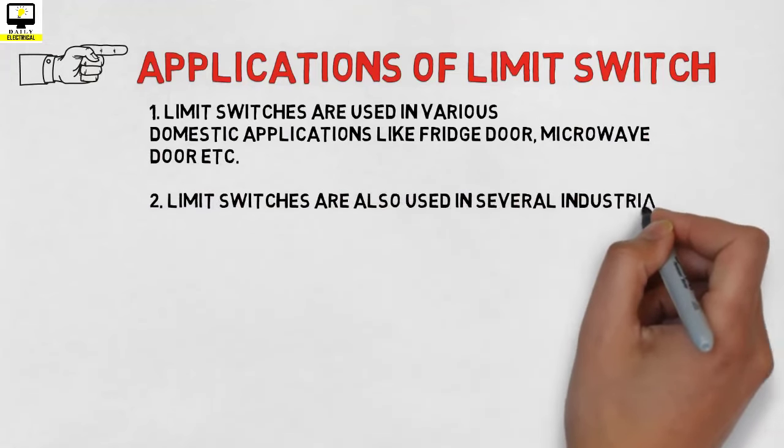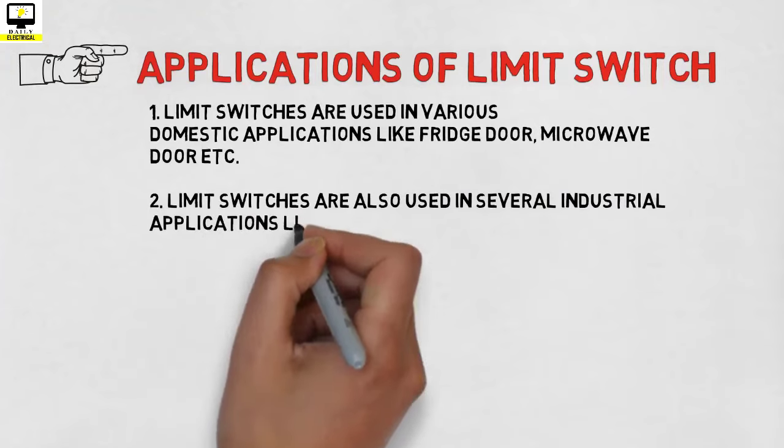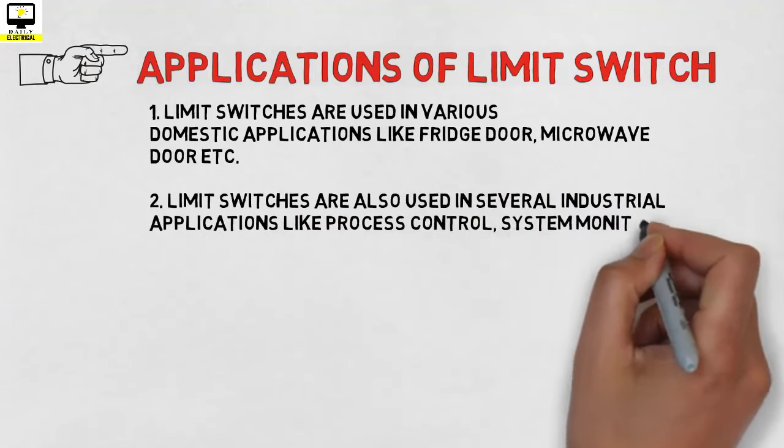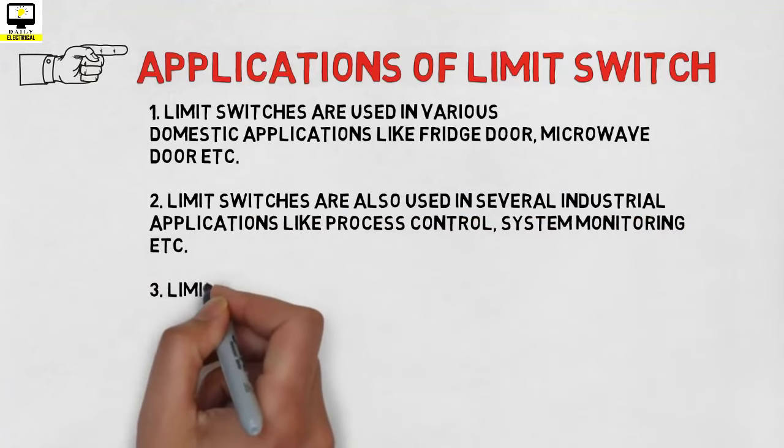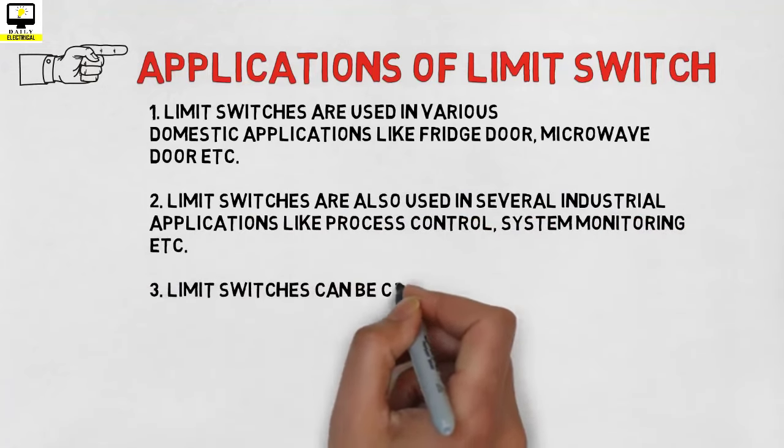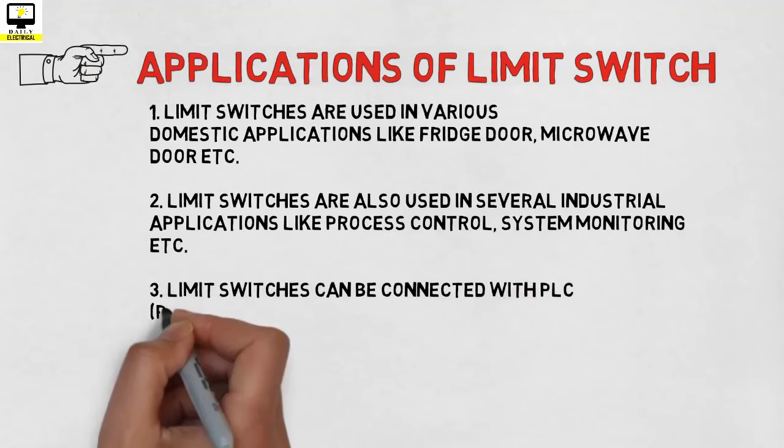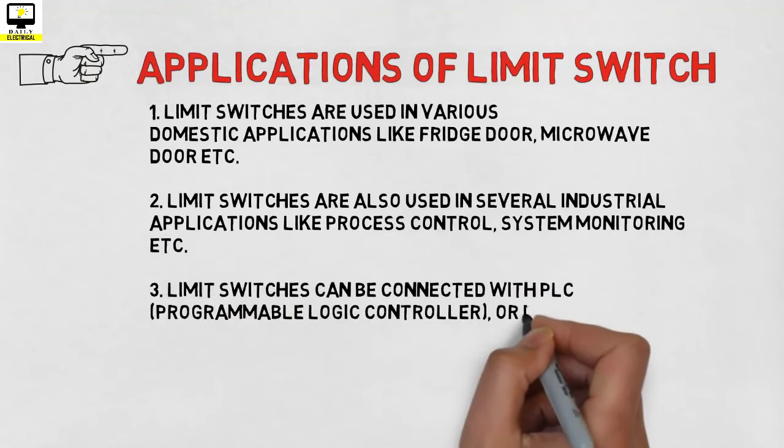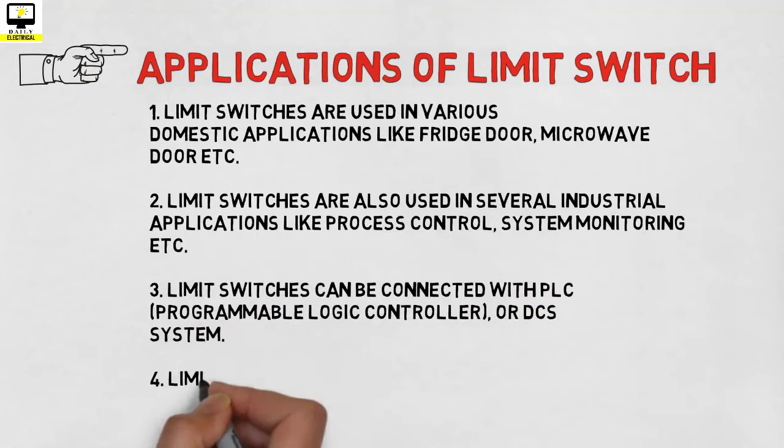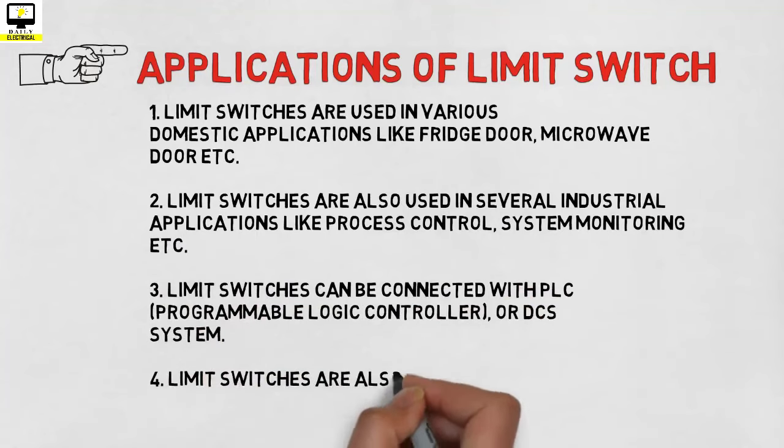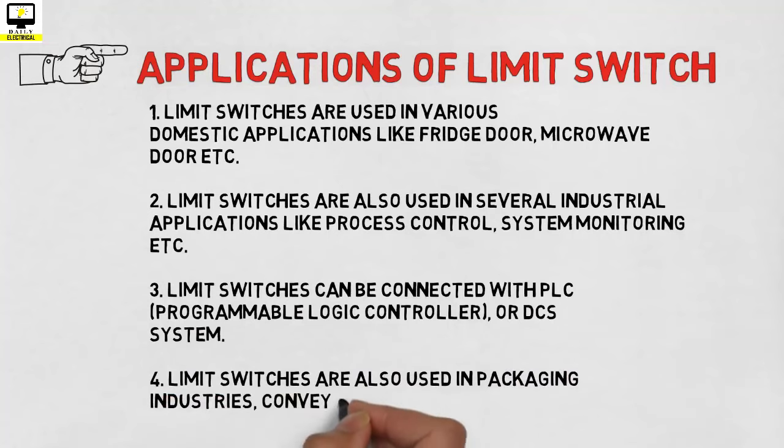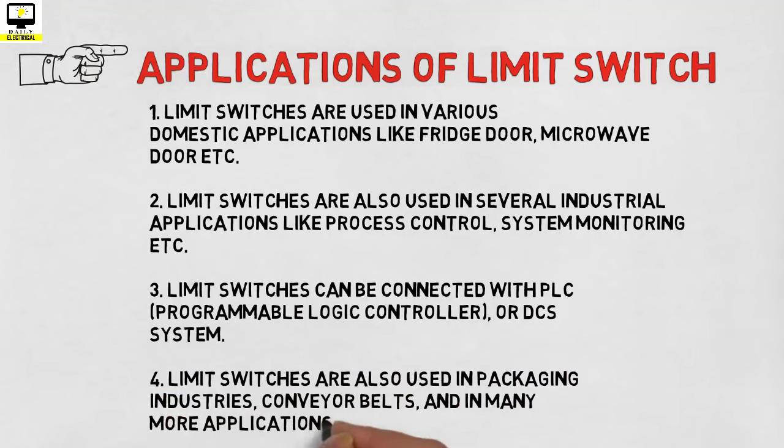Think about some industrial process control industries where we monitor the system and process by using a limit switch. When the position exceeds the predetermined value, then we check the output and hook it up with the PLC or DCS control board and turn off or turn on the motor as per the requirement. In packaging industry also we use various kinds of limit switches. In control motors and conveyor belts we also use limit switch.